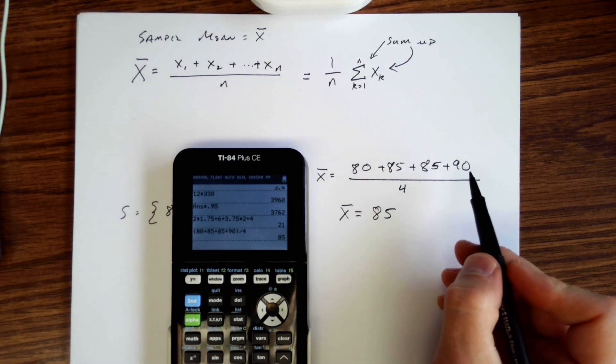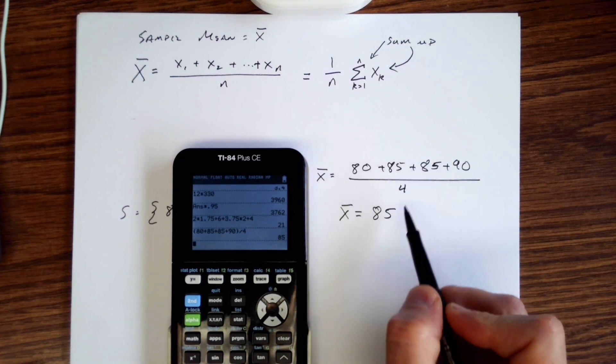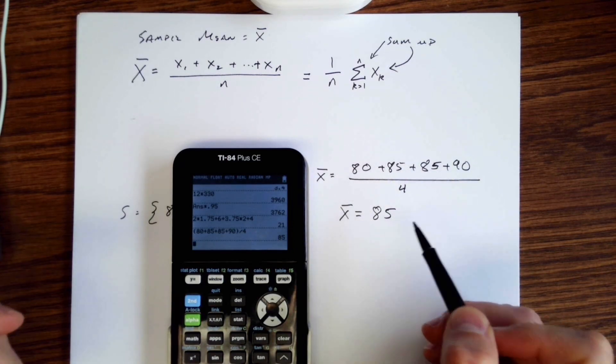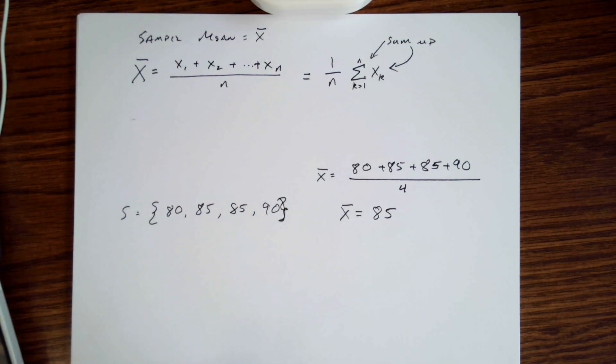All right, that makes sense if you think about this. You got 80 and 90 and then two 85s—the average would be 85. Well, what if we did this? We're talking about test grades or test scores. This was the first four test scores for us, and then we have the fifth test score.